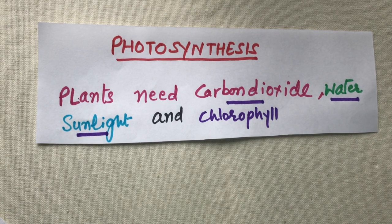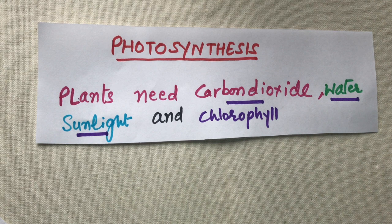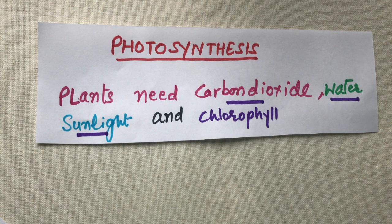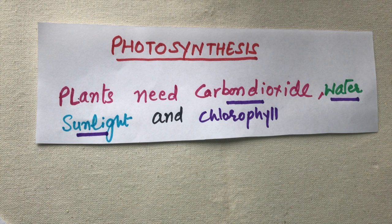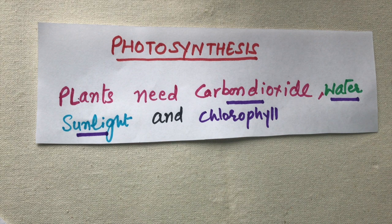Hello students, today I am going to tell you about photosynthesis. You must have seen your mother cooking food in the kitchen. The kitchen is a place where food is cooked. In the same way, plants manufacture their food, and that food is manufactured in the leaves of the plant. So leaves are the kitchen of the plant — we can say the food factory of the plant.